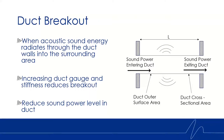Duct breakout is when there's too much sound energy in the duct and it breaks out of the ductwork. If this occurs over an occupied space, it can affect overall noise levels. To mitigate this, we either reduce the sound power in the duct before it reaches the occupied space by installing a noise control device, or we increase the thickness or mass of the duct by increasing the gauge to better contain the noise.